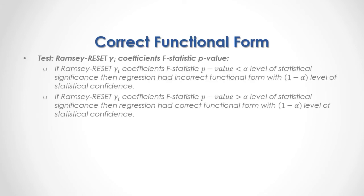What we're testing is the Ramsey Reset gamma coefficients' F-statistic p-value. If the p-value is less than the alpha level of statistical significance, then the regression had incorrect functional form with 1 minus alpha level of statistical confidence. On the other hand, if the p-value is greater than the alpha level of statistical significance, then the regression had correct functional form with 1 minus alpha level of statistical confidence.